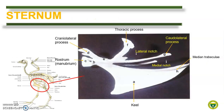In birds, the sternum is well developed, called the keel or carina. The wide surface of the keel is used to anchor the large flight muscles of the birds.